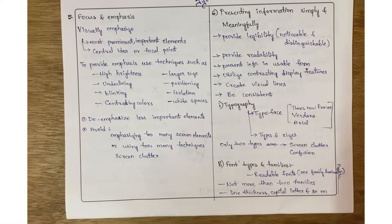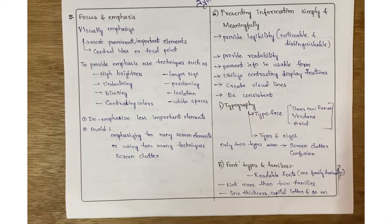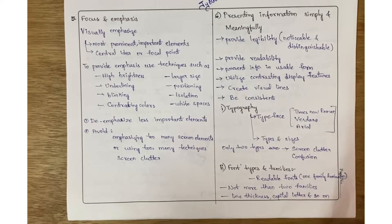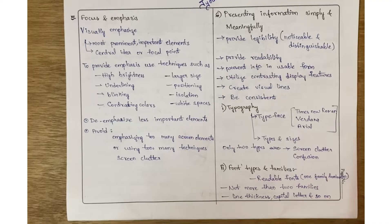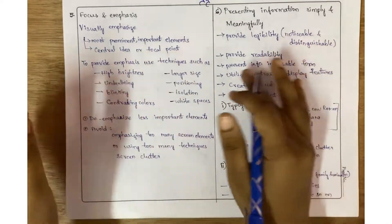Hi everyone, welcome back to the channel. As I said, clarity is influenced by seven parameters. I have explained the first four in the previous video, so go and check it out. The remaining I will be explaining in this video.